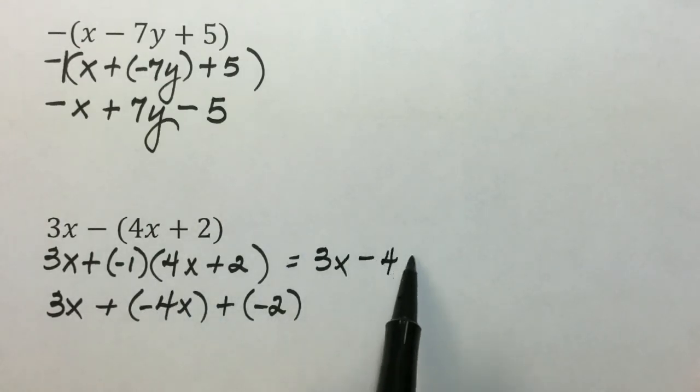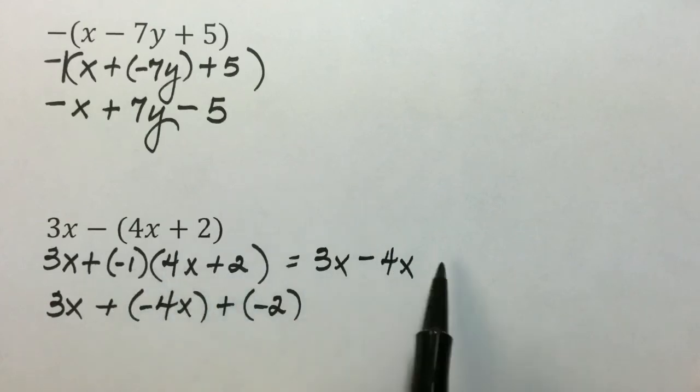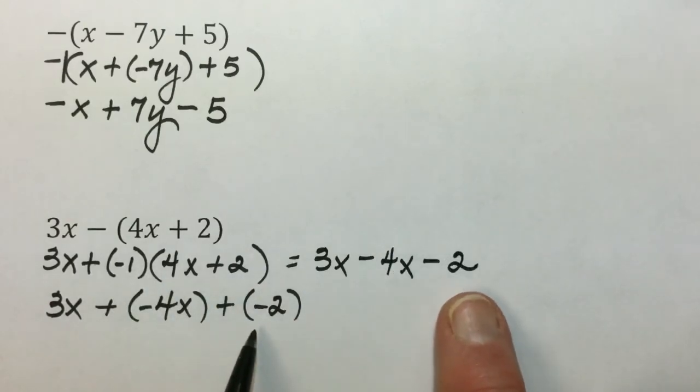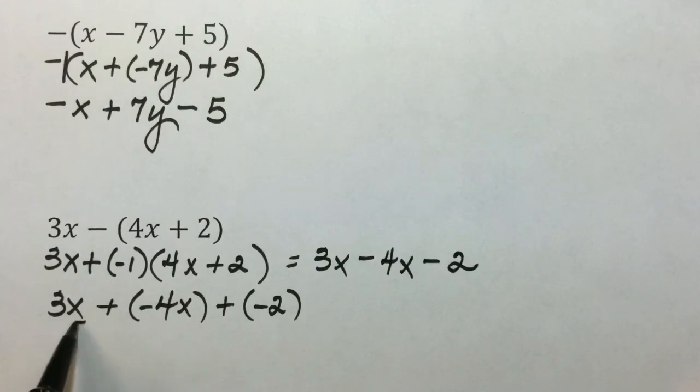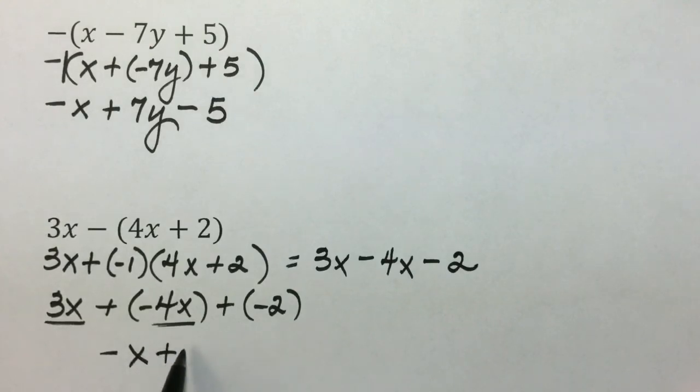Opposite of 2 with a negative results in negative 2. Both of these are equivalent expressions for the same thing. Then go ahead and combine like terms. The first two terms both involve x: 3 plus negative 4 results in negative 1x, with the remaining negative 2 for our final answer.